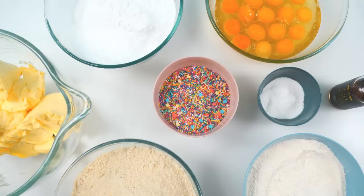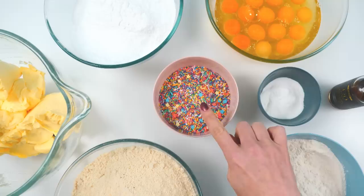For the vanilla sprinkle cake we need butter, icing sugar, eggs, almond meal, flour, sprinkles, baking powder and vanilla.